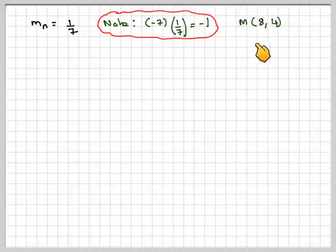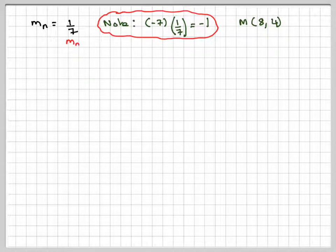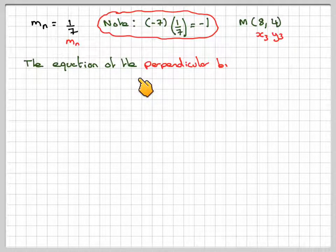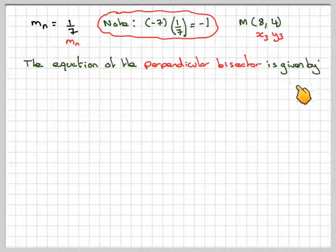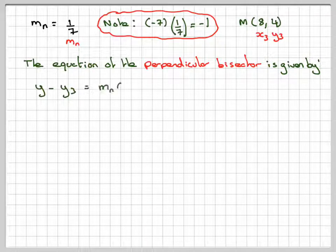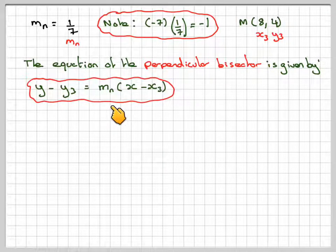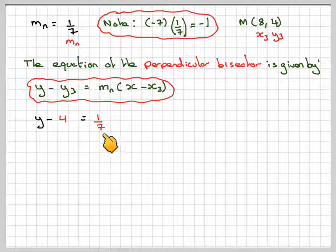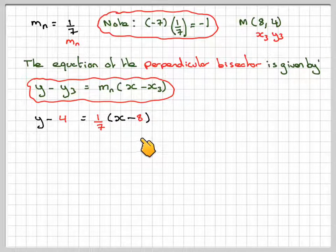Right, we now have that midpoint, which is 8, 4. We call this one MN, and we're going to call this one X3, Y3. Now the equation of the perpendicular bisector is given by Y minus Y3 is equal to MN times X minus X3. So that's going to be Y minus 4 is equal to 1/7, brackets, X minus 8.